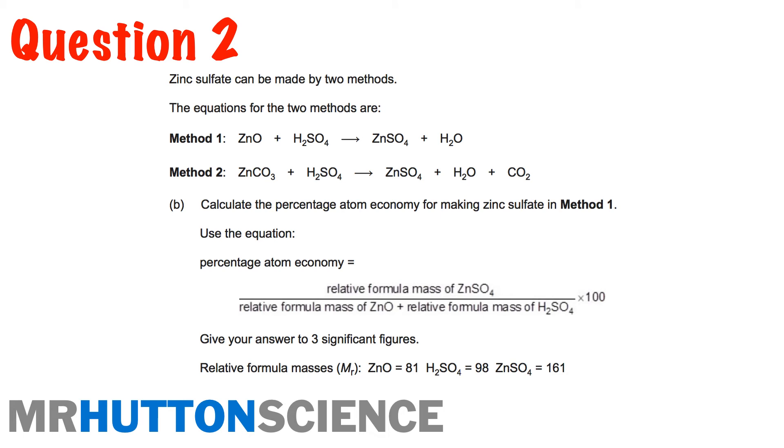Okay. Question two. Again, right. We've got two methods here. So it says calculate the percentage atomic economy for making zinc sulfate in method one. It's only asking us about method one. So again, same thing. It's giving you the equation there. Formula mass of zinc sulfate over the reactants. It's even giving you the MRs of things. So really, guys, I think you're ready to go. So have a go at this one.